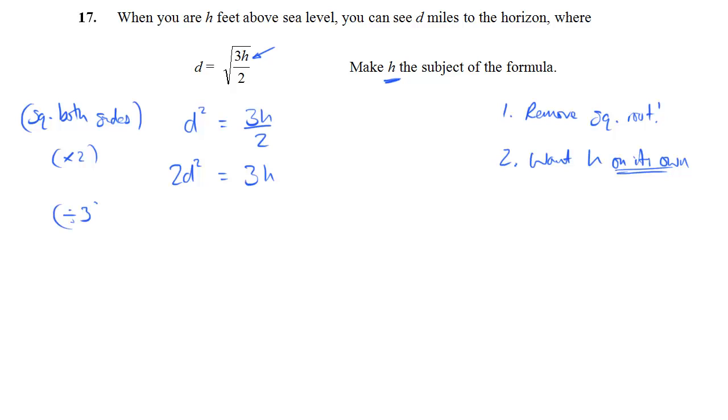And 3 times H, well, I want the inverse of multiplication, which is division. So 2D squared divided by 3 is equal to H. I've divided both sides by 3. And that's it. H may be on the right, but that doesn't matter. H is now the subject, and that is our answer.